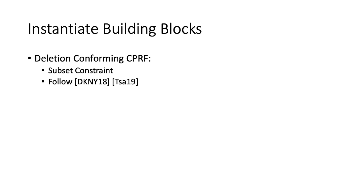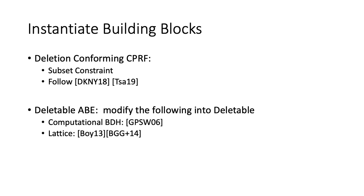How do we instantiate our building blocks? For the deletion-conforming constrained PRF, we can realize subset functionality following the constructions in two prior works. For deletable ABE, we can realize it by modifying various schemes. On the group side, we can modify the GPSW 2006 paper, which uses the search assumption of bilinear groups. On the lattice side, we can use both Boneh et al. 2013 and BGG+ 2014. Though recently, as mentioned, there is an attack on the Boneh et al. 2013 paper — but that came out after the first draft of our paper, and we still leave this example in our paper for illustrative purposes to show how the deletable ABE would work.